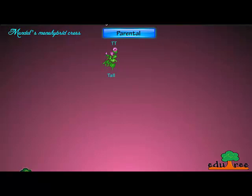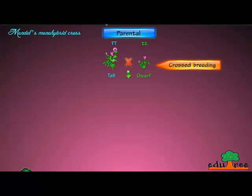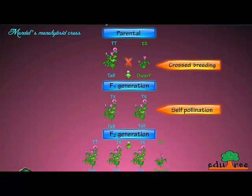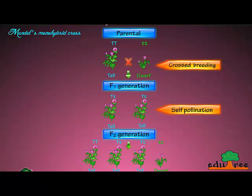Let's take a look at the diagram representation of the monohybrid cross. Mendel took one tall and one dwarf pea plant for cross breeding. He found the child plants were all tall, and considered these as the first filial generation. Then he used tall plants from the first filial generation to self-pollinate, and found that both tall and dwarf plants appeared in the ratio of 3 to 1 — the second filial generation plants. Gregor Mendel worked out the first ever scientific experimental study on heredity, and he was called the father of genetics.